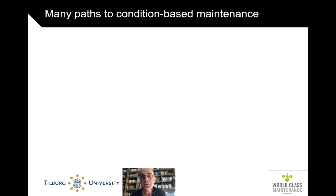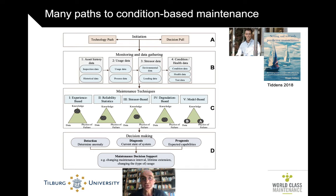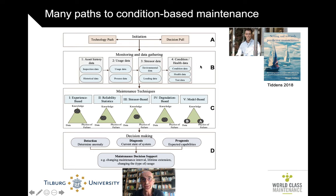There are many paths that lead to condition-based maintenance. A good overview has been given by Wieger Tiddens in his 2018 PhD thesis, 'Setting Sail Towards Predictive Maintenance.' The coming slides are mostly based on that thesis. Wieger developed a four or five-step approach covering data collection, data analysis, maintenance techniques, and decision-making.